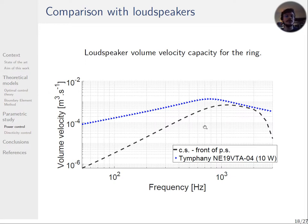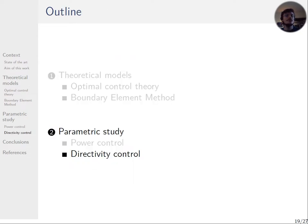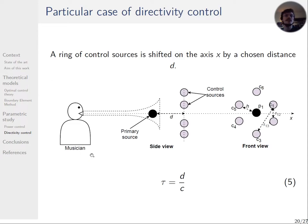In addition to the power attenuation, it is also interesting to be able to control the directivity of the system. The goal is now to make a control of the directivity in order to focus the sound towards a desired localization. Let's take the example of a musician who would like to hear the sound of his instrument louder. The directivity would then have to be adapted so that the sound would be louder only towards the musician. For this, the control source layer is shifted by a distance d on the x-axis. Then a delay corresponding to the flight time between the primary source and the control one is added to the optimal volume velocity to achieve a cardioid shape. The delay is τ equal d over c.